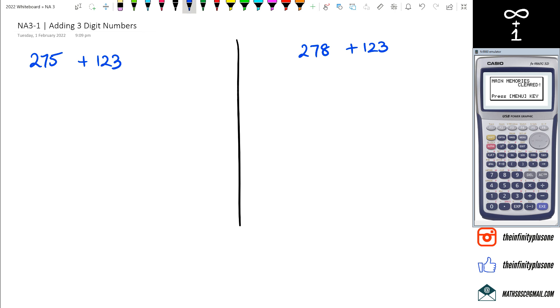Let's get started with the first question. Here we've got 275 and 123. Basically what I'm going to do is stack the two numbers on top of each other, so I've got 275 and 123. The reason I want to stack it like this is because I want to line up all the ones column together, all the tens column together, and then of course the hundreds column together.